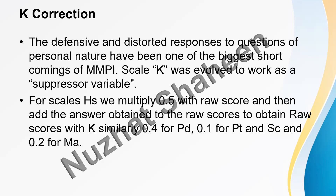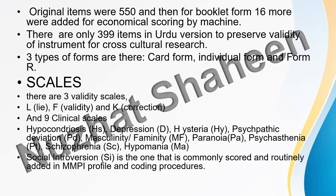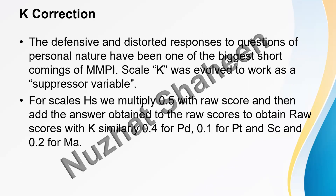There are five scales to which we apply the K-correction: HS (Hypochondriasis), PD (Psychopathic Deviation), PT (Psychasthenia), SC (Schizophrenia), and MA (Hypomania). For each, we multiply the K raw score by a fraction: HS gets 0.5K, PD gets 0.4K, PT gets 1.0K, SC gets 1.0K, and MA gets 0.2K, then add the result to the scale's raw score.